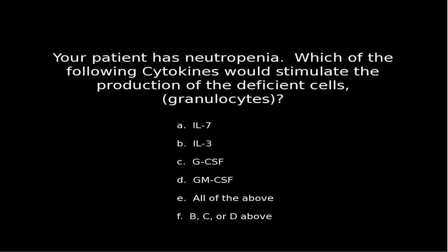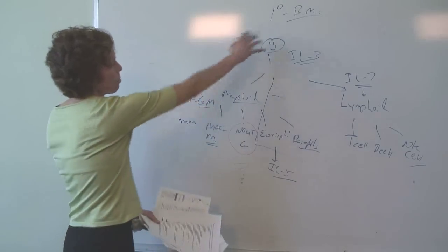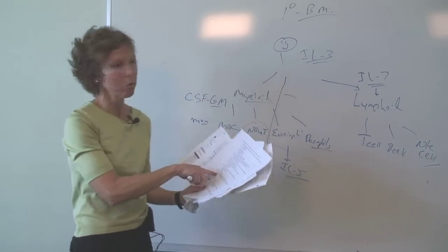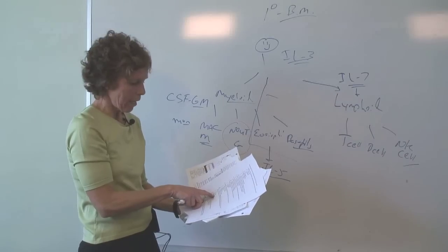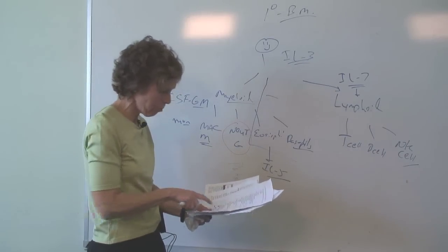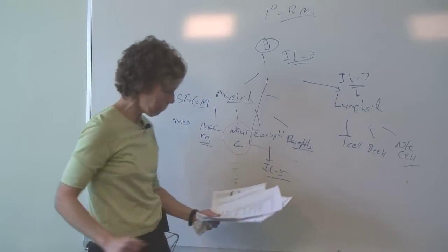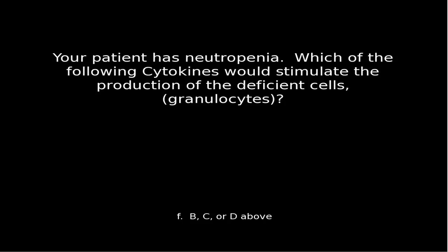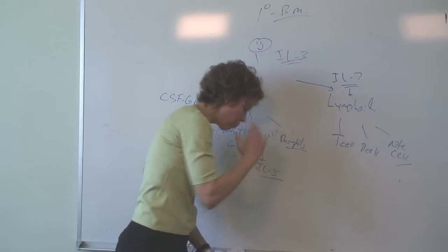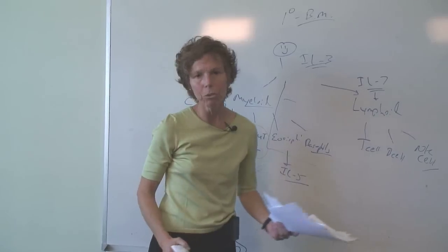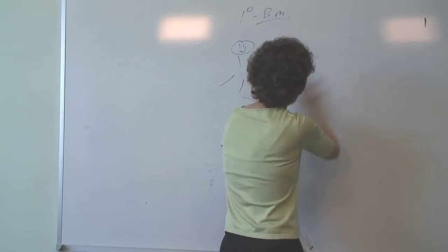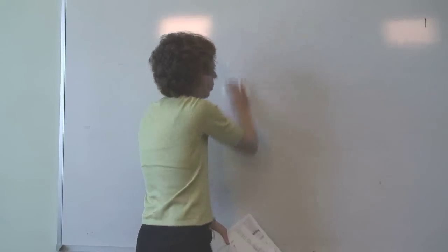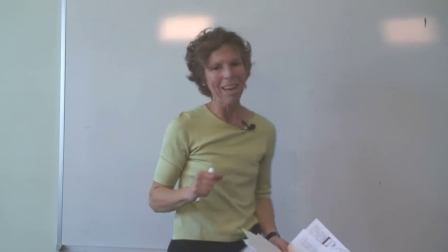Tracing back to the neutropenia question: IL-7 is lymphoid, so no. IL-3 could work as a general factor. Granulocyte-CSF — yes, those are definitely granulocytes. GM-CSF — yes, that's generic to both granulocyte and monocyte production. So the answer is B, C, or D. This is something to commit to memory, not only for the USMLE or immunology class, but because there are actual synthetic drugs — versions of these cytokines — that have real therapeutic applications.